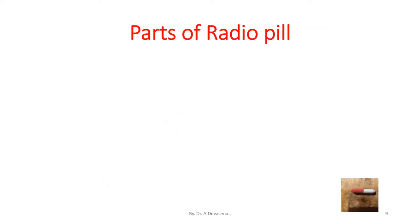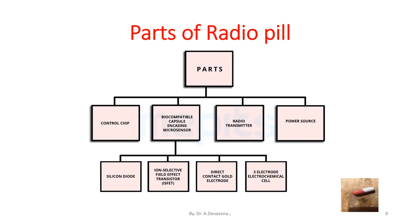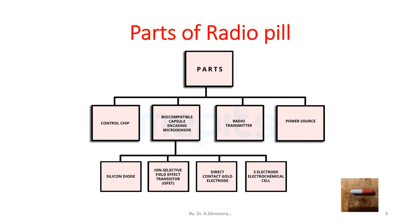The radio pill comprises of a control chip, biocompatible capsule, encasing microsensor, radio transmitter, and power source. The biocompatible capsule microsensor may be a silicon diode, an ion selective field effect transistor (ISFET), a direct contact gold electrode, or a three-electrode electrochemical cell.